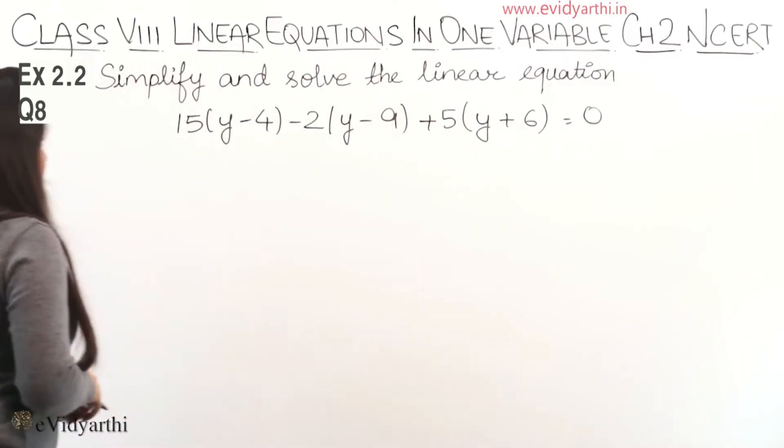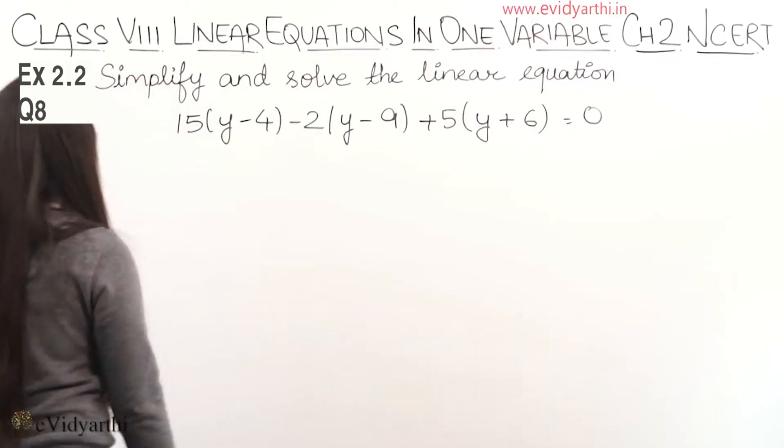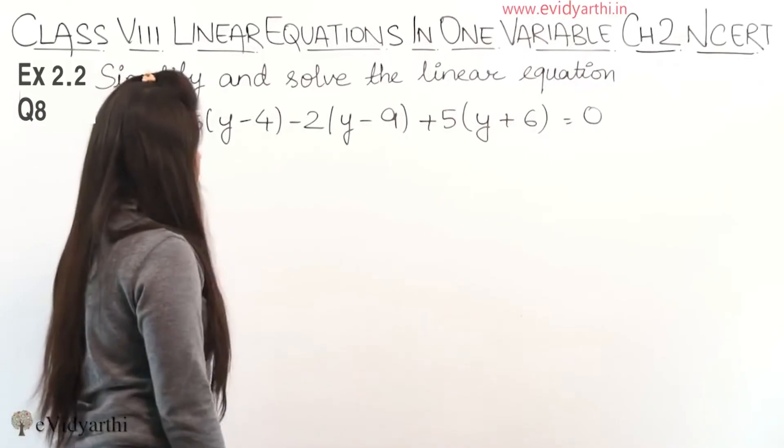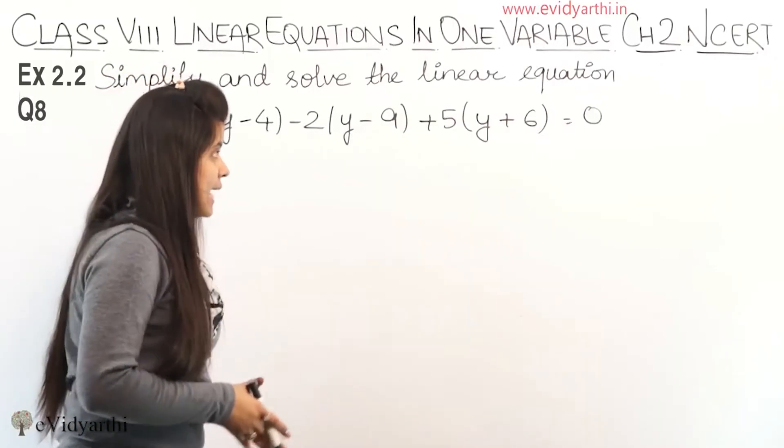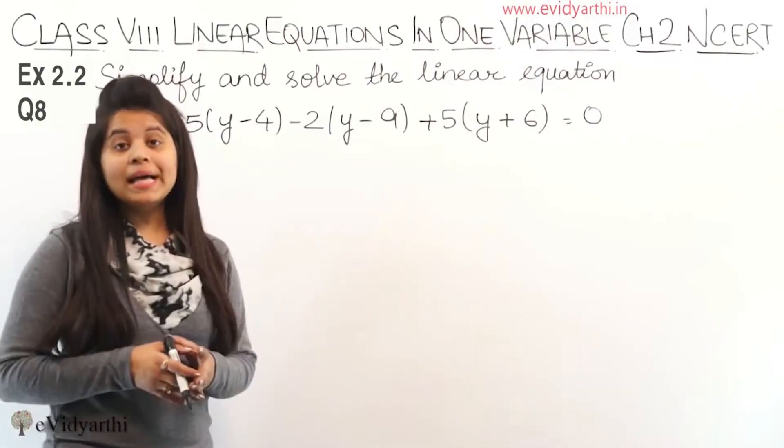In this question, you have to simplify and solve the linear equation. The equation is 15(y - 4) - 2(y - 9) + 5(y + 6) = 0.